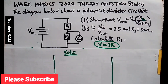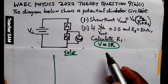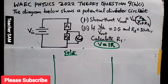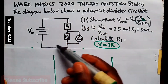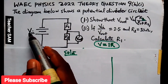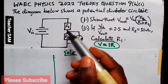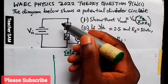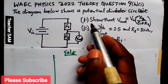Let me divide this workspace into three sections. From Ohm's law, we know that voltage equals IR. Looking at this diagram, the voltage in is going to affect both resistances. If you look at these resistances, they are arranged in series.